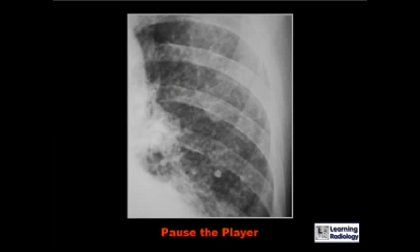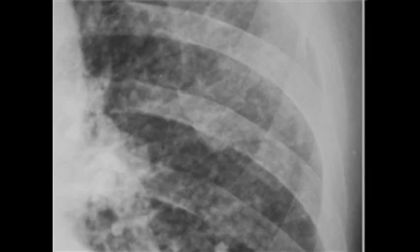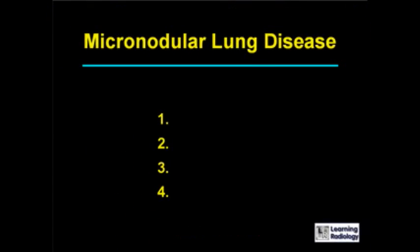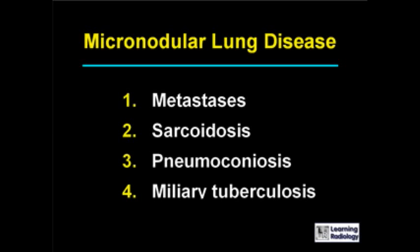The next differential is for micronodular lung disease. There are four causes: metastases, sarcoidosis, pneumoconiosis, and miliary tuberculosis.